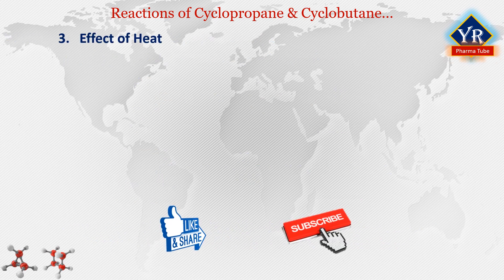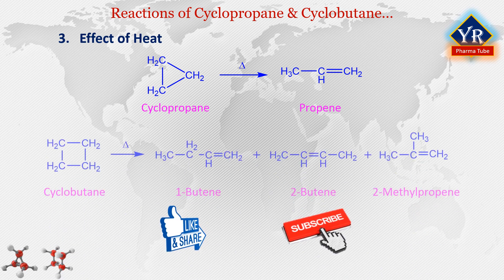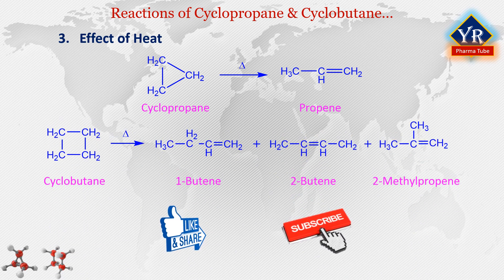The last reaction is the effect of heat. When cyclopropane is heated it produces propene, which possesses a double bond in its structure. Similarly, cyclobutane on heating yields a mixture of compounds known as 1-butene, 2-butene, and 2-methylpropene.